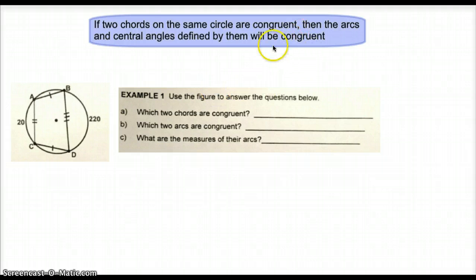Our first theorem is that if two chords on the same circle are congruent, then the arcs and central angles defined by them will be congruent. Let's take a look at our first example. We're going to use this figure to help us answer these questions. Based on the diagram, the first thing I want you to do is identify the two congruent chords. You can do that by looking for the congruent symbols here and here.